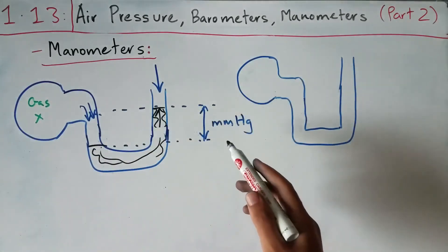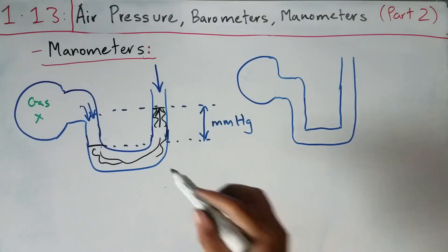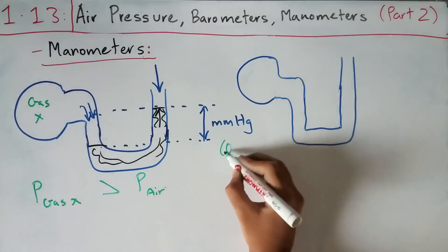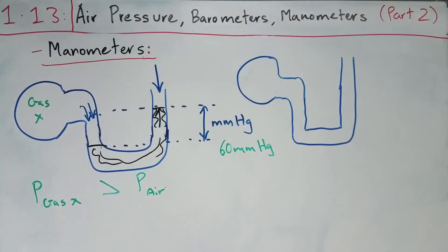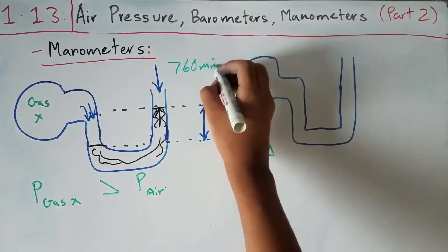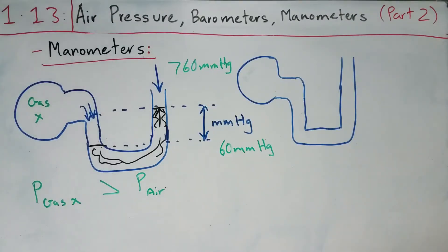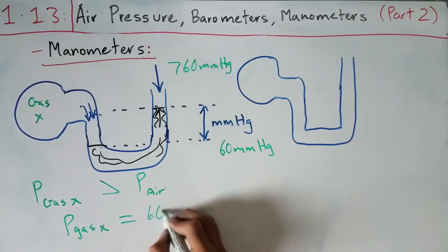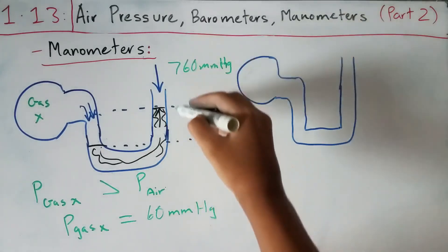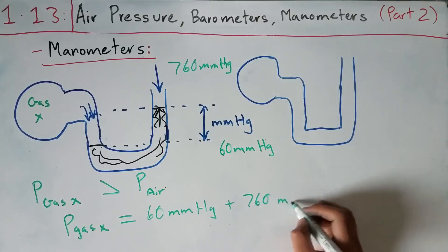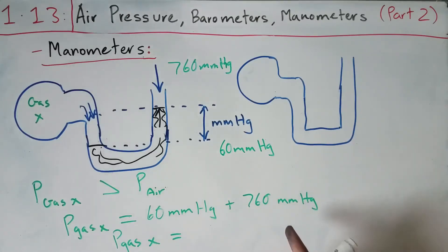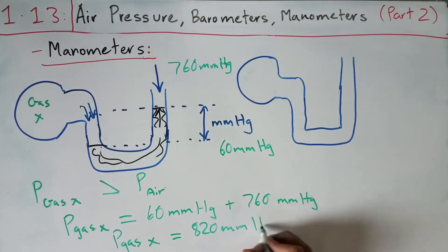The pressure difference equals the change in mercury height, but that is not the total pressure of the gas. The total pressure of the gas equals the height difference plus atmospheric pressure. For example, if the height difference is 60 mmHg and atmospheric pressure is 760 mmHg, then the pressure of gas X equals 60 + 760 = 820 mmHg.